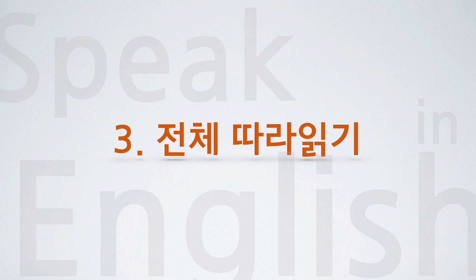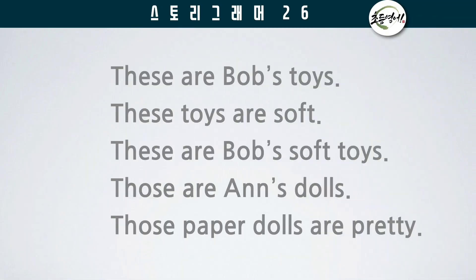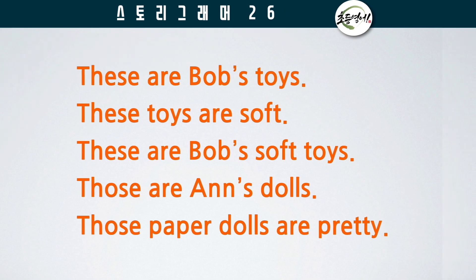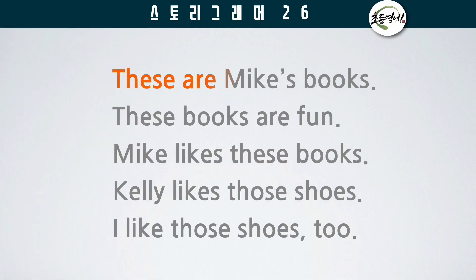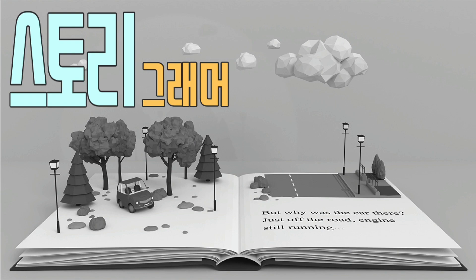전체 따라 읽기. These are Bob's toys. These toys are soft. These are Bob's soft toys. Those are Ann's dolls. Those paper dolls are pretty. These are Mike's books. These books are fun. Mike likes these books. Kelly likes those shoes. I like those shoes too. Story grammar.